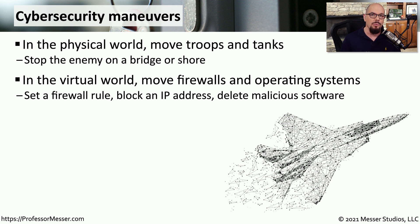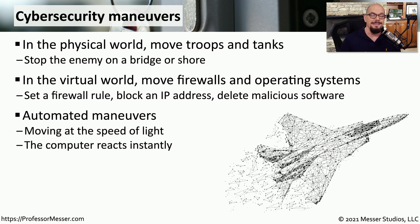We can deploy additional firewalls, intrusion prevention, and scanning systems to understand what's happening on the network right now. We can have firewalls look for particular types of data flows to block, look for IP address ranges we don't want on our network, and have these systems delete any software we feel may be malicious. Unlike a military that takes time to deploy, these systems are virtualized — the moment big data analytics identifies a threat, it can immediately deploy protections to the affected parts of the network.